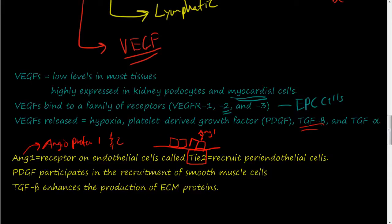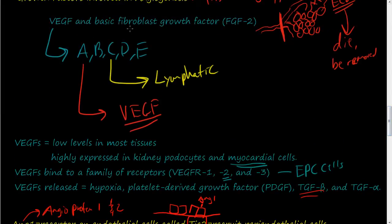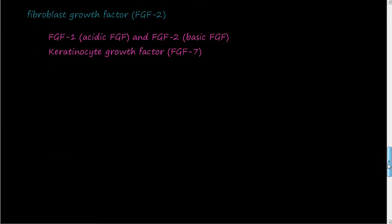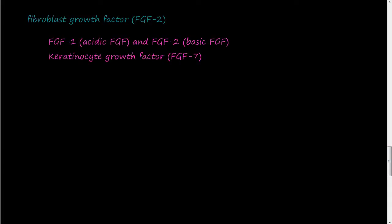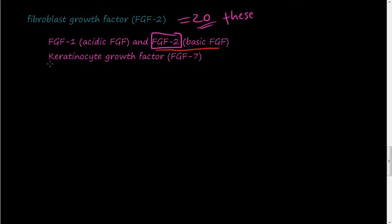Now let's finish up by talking about fibroblast growth factor. There are about 20 FGFs. FGF1 is the acidic fibroblast growth factor, FGF2 is the basic fibroblast growth factor, and FGF7 is another important one. I want to talk about FGF7, FGF2, and FGF1.